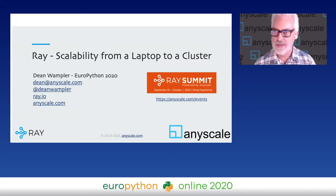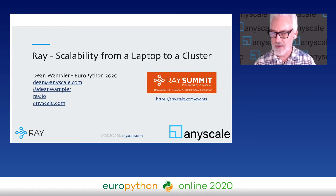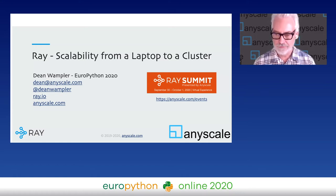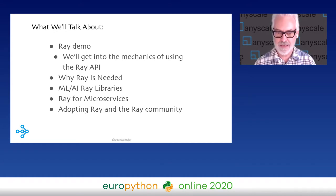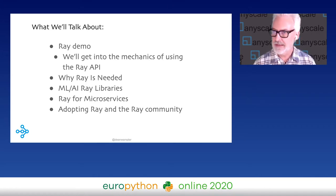You can reach me at my email address, and I'm on Twitter at Dean Wampler. Ray.io is the site for Ray. I work for Anyscale, the company developing Ray, and we're having a Ray Summit this fall, September 30 and October 1. This will be a fast talk — I have 30 minutes. I hope you get the gist of what Ray is and why you might be interested in it. We can take questions in the Discord channel afterwards.